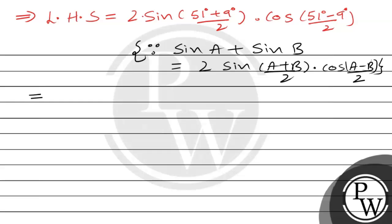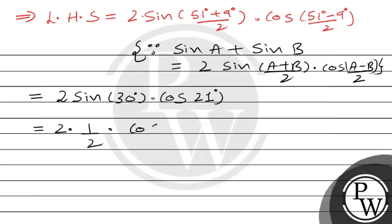This equals 2 · sin((51° + 9°)/2) · cos((51° − 9°)/2) = 2 · sin 30° · cos 21°. Since sin 30° = 1/2, this gives 2 × (1/2) × cos 21°. The 2 and 2 cancel, giving cos 21°.